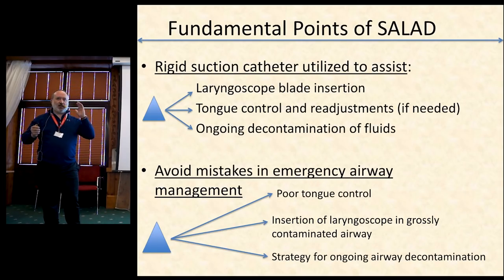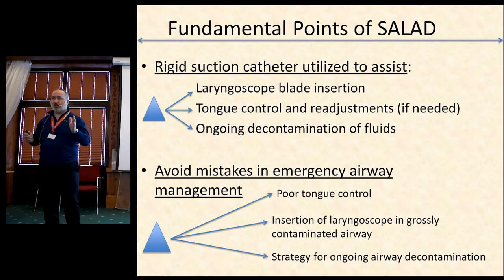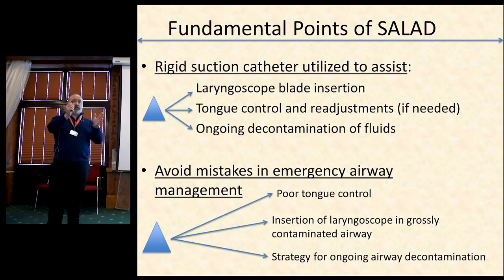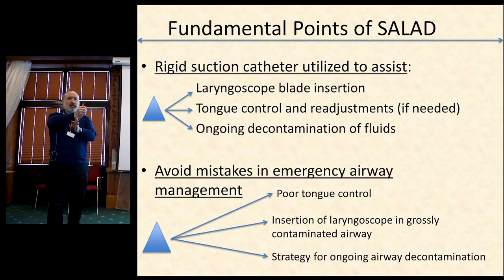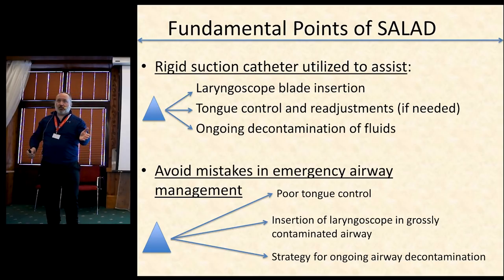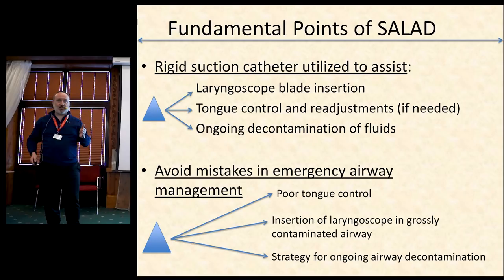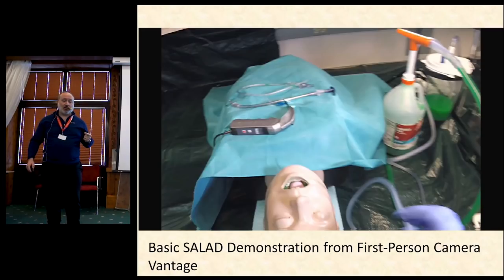Fundamental points: we're going to use the rigid suction catheter like a tongue depressor to actually open the oropharynx and control the tongue. If you shoot down the midline as Rich is suggesting and have a problem with the tongue, you can use the rigid suction catheter like a hockey stick to literally push the tongue to the other side of the blade. It will decontaminate on an ongoing basis, helps you avoid poor tongue control, prevents insertion of a laryngoscope into a grossly contaminated airway, and gives you a strategy for ongoing airway decontamination.